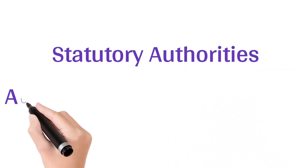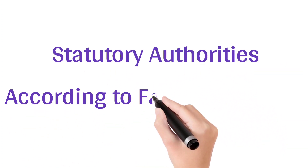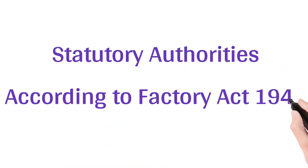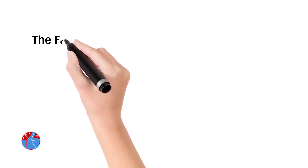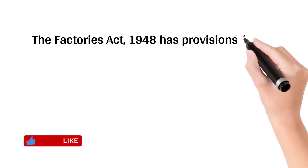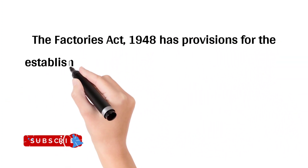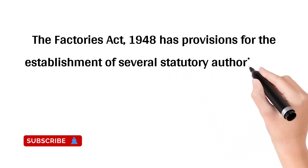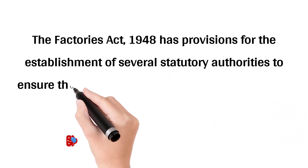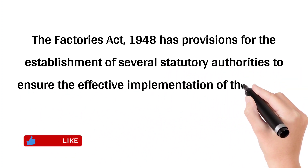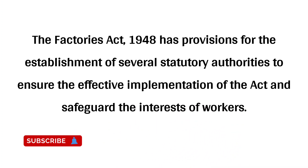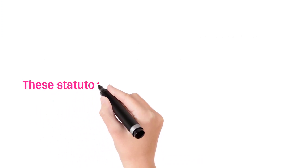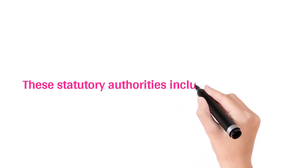Statutory authorities according to the Factories Act, 1948. The Factories Act, 1948 has provisions for the establishment of several statutory authorities to ensure the effective implementation of the Act and safeguard the interests of workers. These statutory authorities include the following.